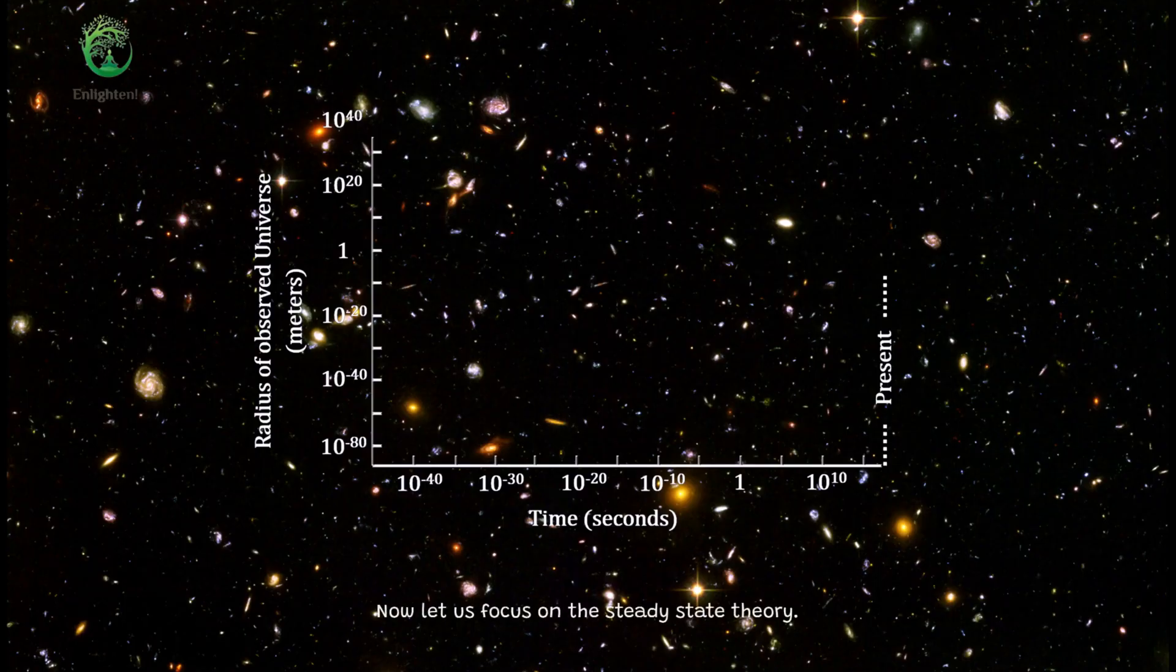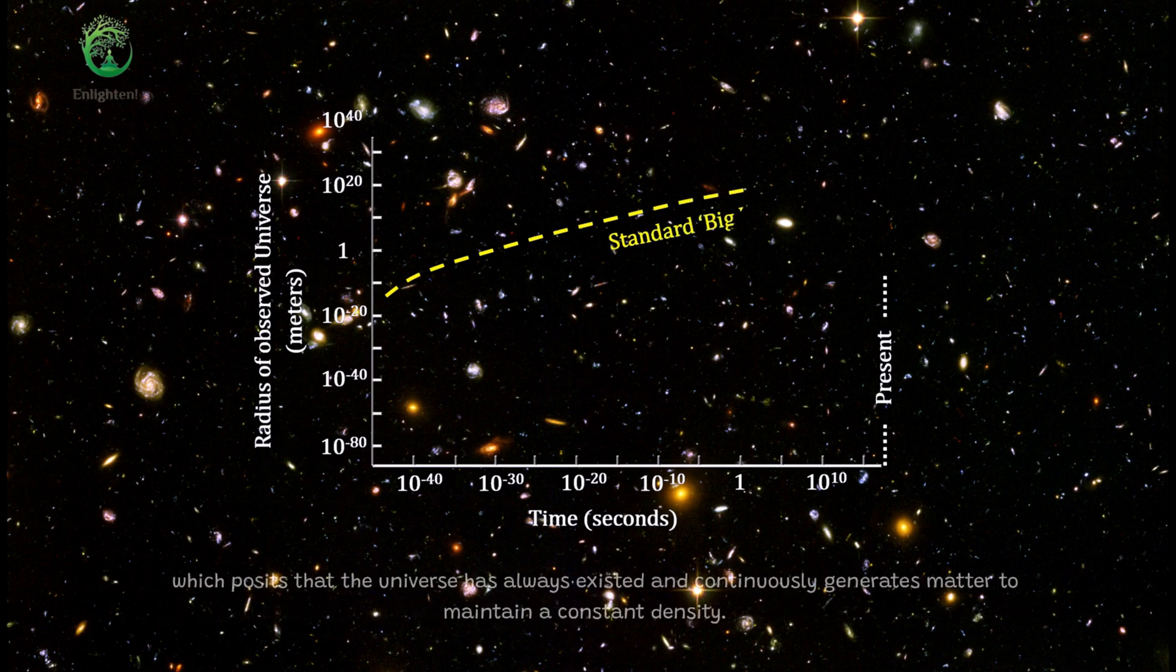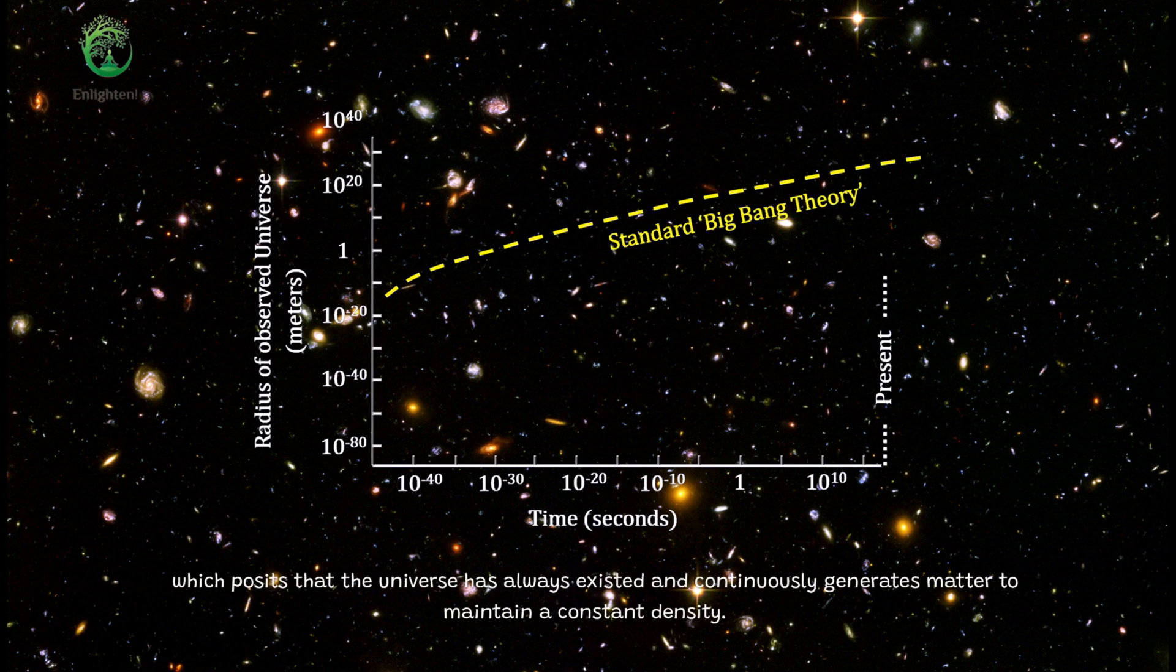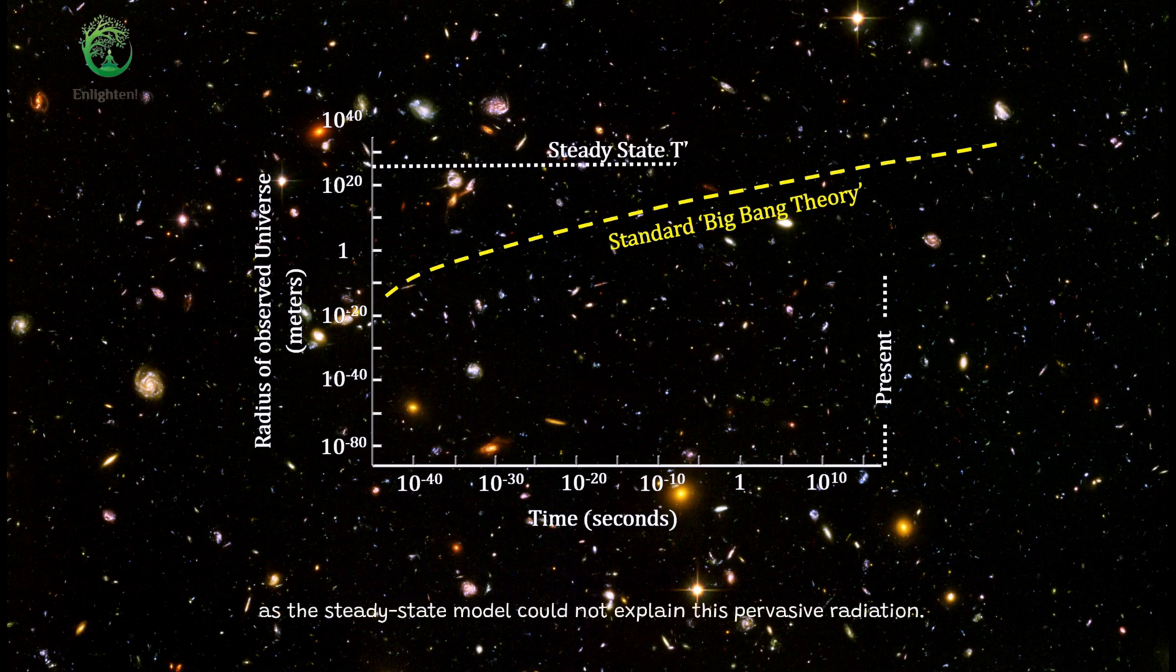Now let us focus on the steady-state theory. In the mid-20th century, a group of audacious scientists proposed the steady-state theory, which posits that the universe has always existed and continuously generates matter to maintain a constant density. However, the discovery of cosmic microwave background radiation in 1965 dealt a severe blow to this theory, as the steady-state model could not explain this pervasive radiation.